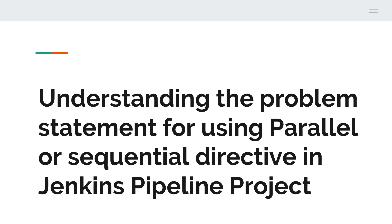So why do we basically require the sequential directive in Jenkins pipeline? Let's suppose you are creating a CI/CD pipeline in Jenkins, and as part of the pipeline you have build, deploy, and test stages. In this case, your deployment will not run until you have a build, and your test will not execute until both build and deployment are completed. So these have to be in a sequential order - that's when we use the sequential directive.